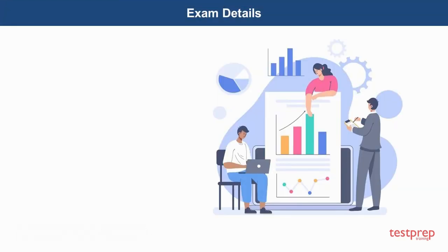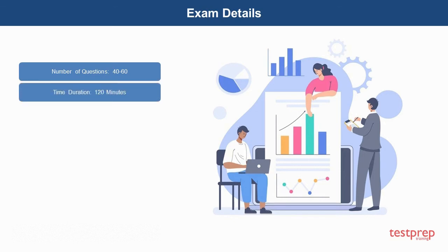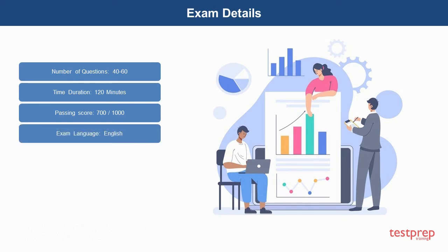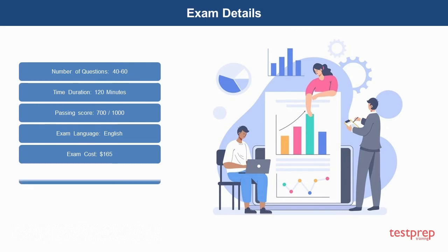Exam details: 1. Number of questions: 40 to 60. 2. Time duration: 120 minutes. 3. Passing score: 700 out of 1000. 4. Exam language: English. 5. Exam cost: $165. 6. Exam scheduling: Pearson VUE website.